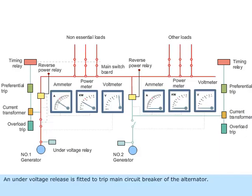An undervoltage release is fitted to trip the main circuit breaker of the alternator. It trips the alternator breaker when a severe voltage dip occurs.